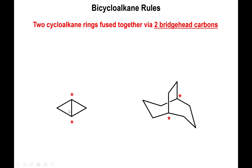Bridge heads represent the carbon positions where the two rings meet. You can see here very clearly that the cyclopropane going to the left meets with the cyclohexane going to the right exactly at those two carbons. Over here it's a little harder to tell, but at those positions — the front carbon and the back carbon — this is where the fused rings meet. In essence, this overall bridge is shared by both the left ring and the right ring in this bicycloalkane, but it is via these two carbons in particular that the fusing occurs.